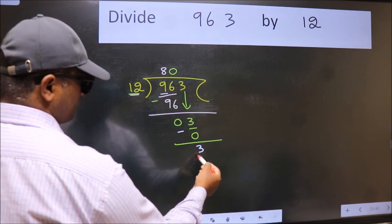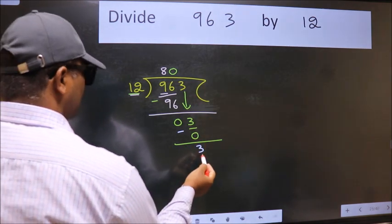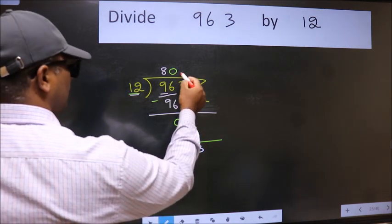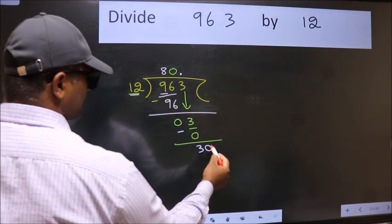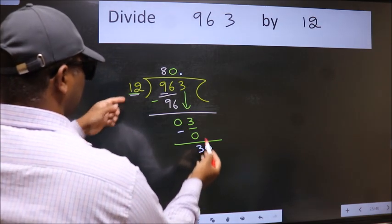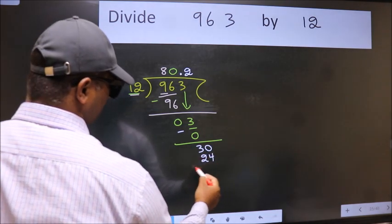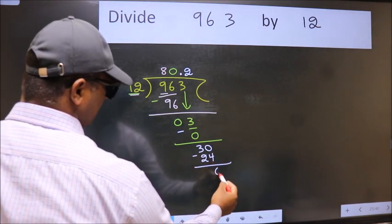Now we subtract, we get 3. Over here we did not bring any number down and 3 is smaller than 12. So now we can put dot and take 0. So 30. Our number close to 30 in 12 table is 12×2 is 24.